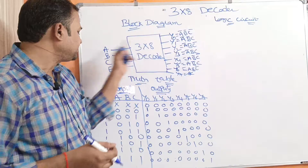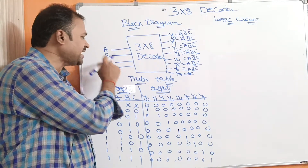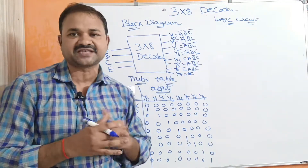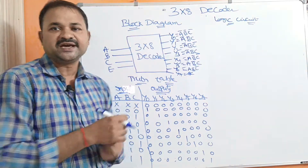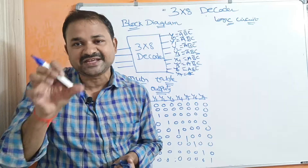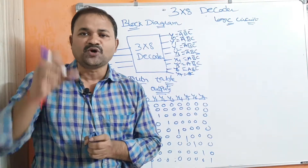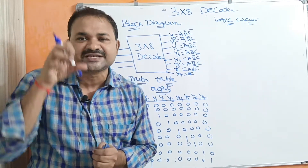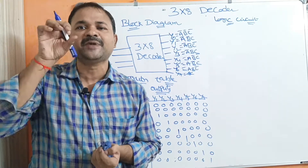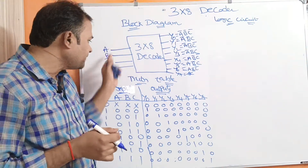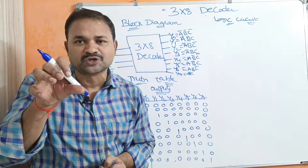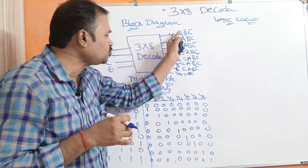This is the block diagram. A 3x8 decoder accepts three inputs such as A, B, and C and it produces eight outputs such as Y0, Y1, Y2, Y3, Y4, Y6, and Y7. In addition to the three inputs, here we have another input called E. E stands for enable input. If the enable input is active then only the decoder produces the output. If the enable input is low then it doesn't produce any outputs. A 3x8 decoder is called a many-input many-output circuit because it accepts many number of inputs and produces many number of outputs. So a 3x8 decoder converts three input lines into eight output lines.